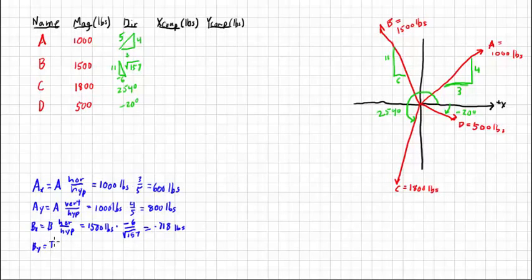BY likewise, it's B times the vertical, 1,500 pounds, and this time we're multiplying by 11 over the square root of 157, brings us to 1317 pounds.